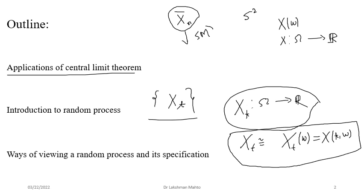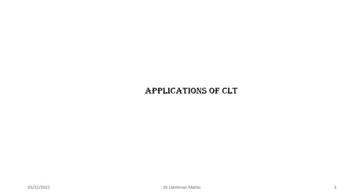We will view the random process from two different perspectives of these two arguments. When we keep t fixed, the random process takes the nature of a random variable. When we fix the outcome omega, we get a sample path or one realization of the random process. After that, we will specify a random process through its joint distribution. We sample a finite number of time instants and look at the joint distribution of the corresponding random variables — that is the ultimate way to specify a random process.